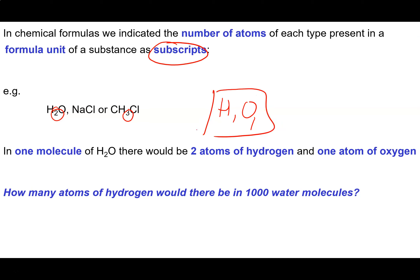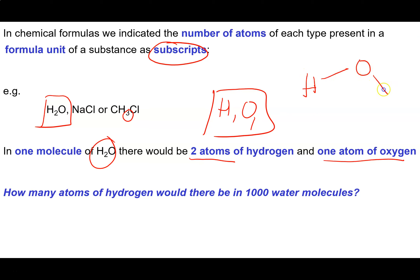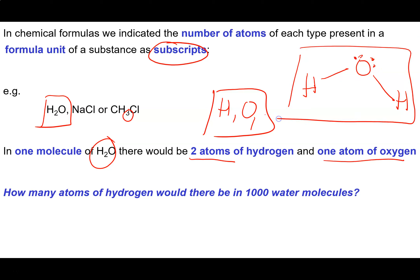If I look at water here, what this formula is telling me is that in one molecule of water, there would be two atoms of hydrogen for every one atom of oxygen. Because this is a covalent compound, a water molecule is composed of three atoms connected to one another — two of those atoms are hydrogens and one is oxygen.